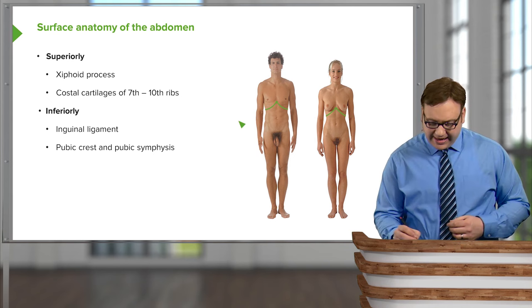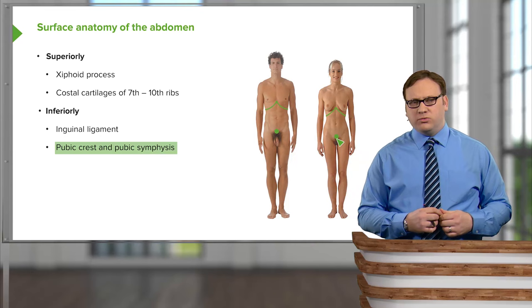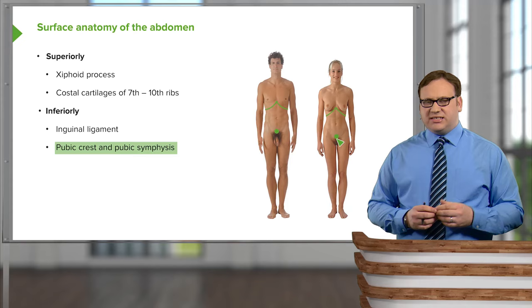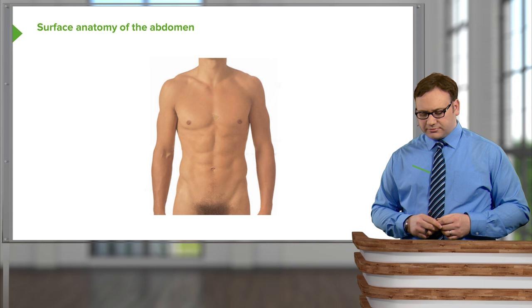Inferiorly, we have a few landmarks we can observe. In the midline in both the male and female, we have the pubic crest and the pubic symphysis — we'll see these later when we look at the bones of the pelvis. Radiating away from the pubic crest and pubic symphysis, we find the inguinal ligaments, one on either side, and these form the inferior boundary of the abdomen.